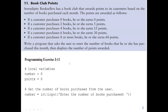Here we are going to solve two problems using decision control structures. Our first question: we have a bookseller with a book club that awards points to customers based on the number of books purchased each month. If a customer purchases zero books, they earn 0 points; two books earns 5 points; four books earns 15 points; six books earns 30 points; and eight or more books earns 60 points.